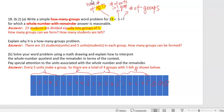And that means, again, units means students. So five students in each group. How many groups can we get?